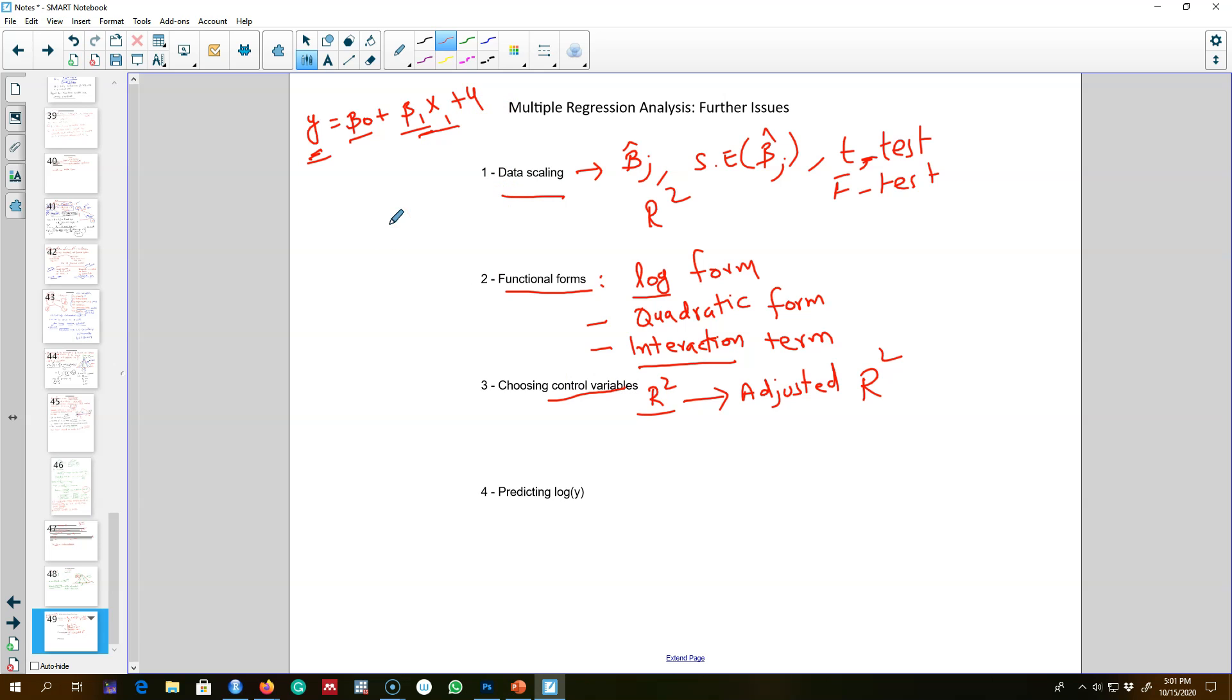We're going to base our control variables—that is, how many variables should we include in the model—based on adjusted R-squared. And finally, I'm going to talk about an issue with a dependent variable which is represented in a logarithmic form.